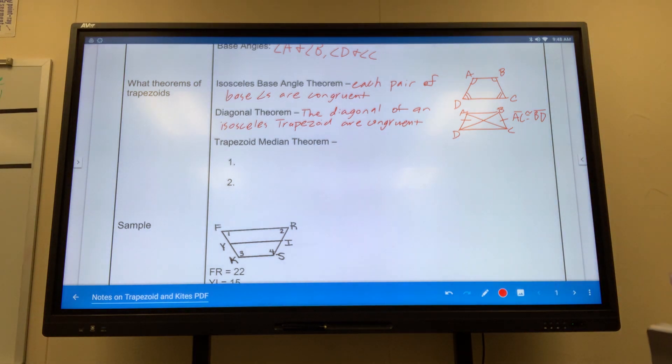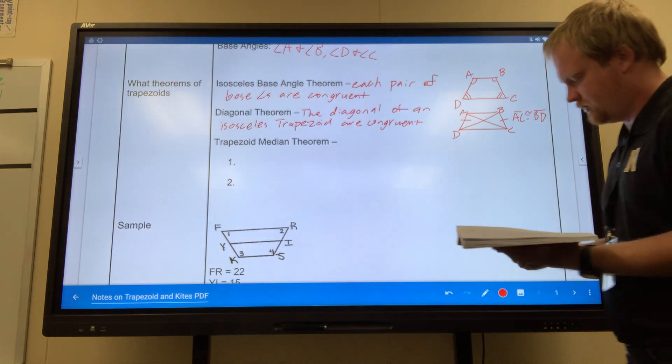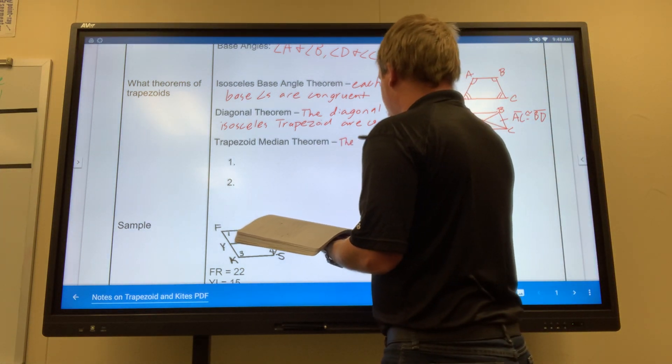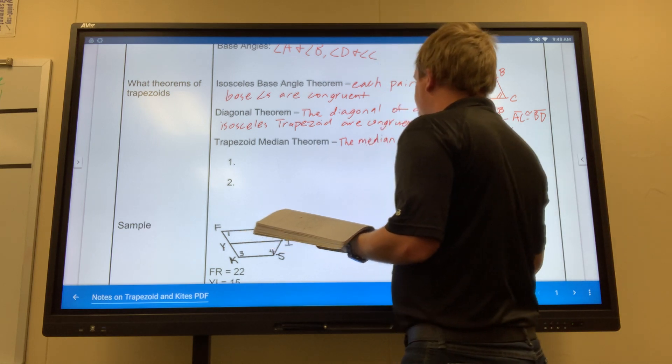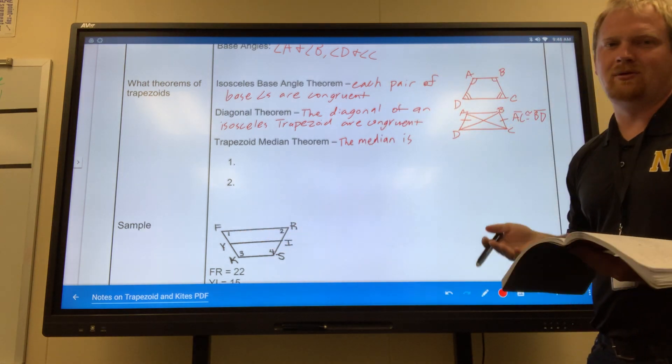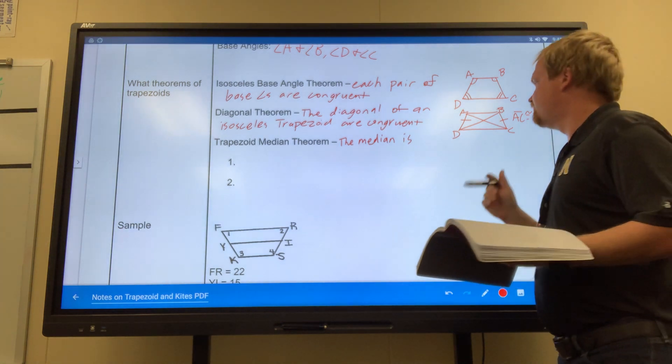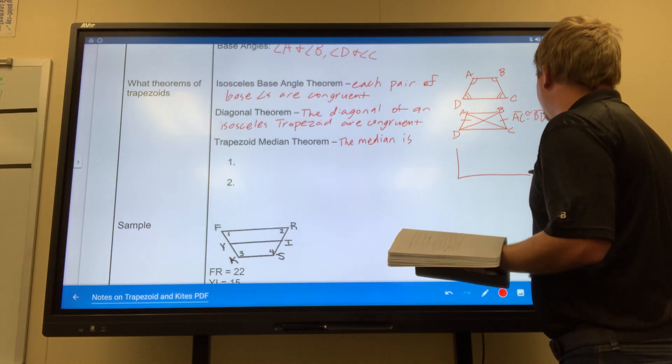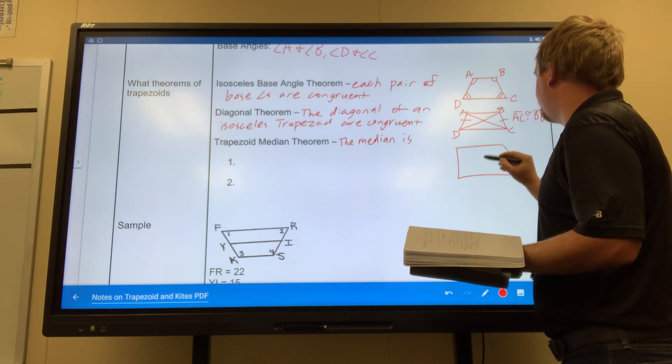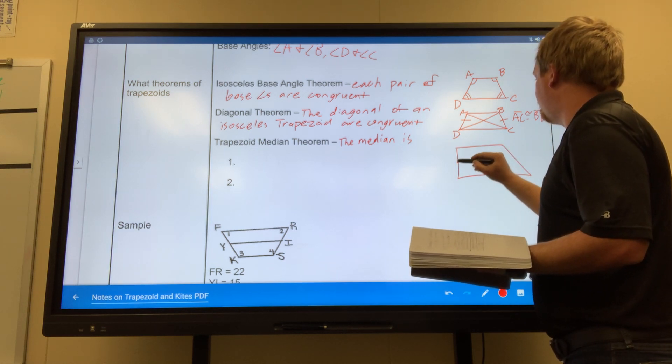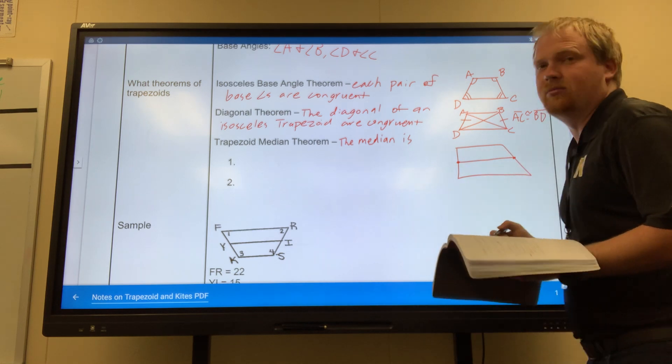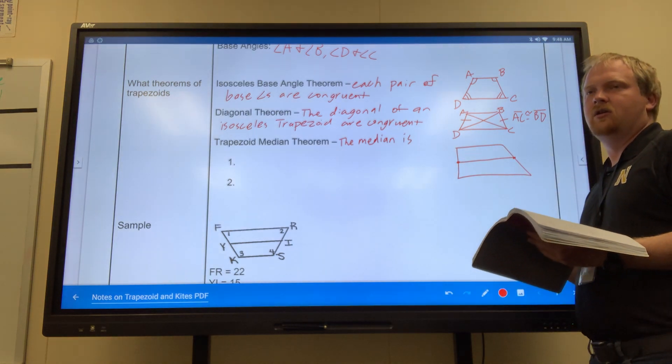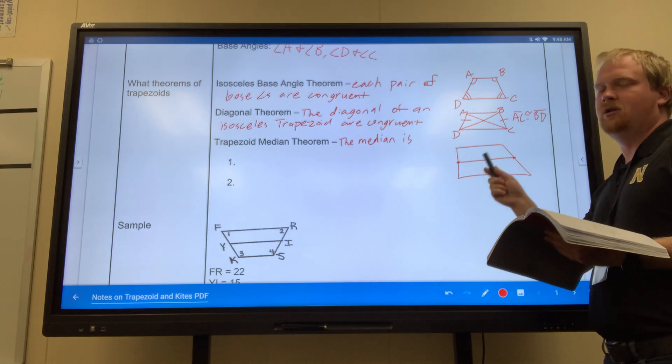Now, if I look at trapezoid median theorem, the median is, first off, we got to remember what median is. So here's a non-isosceles trapezoid. If I make two halfway points on both sides and draw a line, that's the median. It's just a segment from two midpoints.